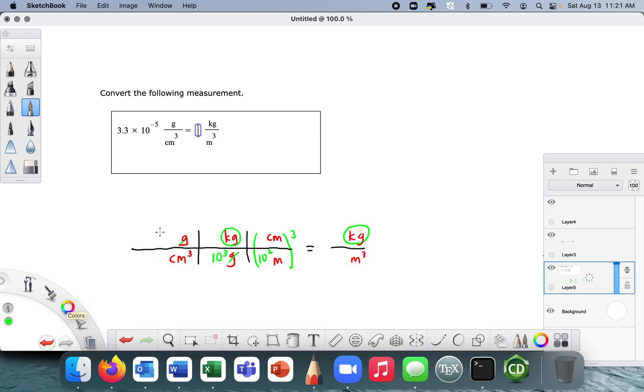So I think we're ready to put our numbers in now. It's 3.3 times 10 to the negative 5, 3.3 times 10 to the minus 5, okay? And so let's bring, and the cubic, the grams are crossed off, kilograms are introduced.